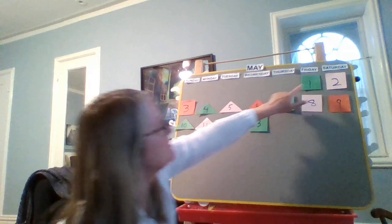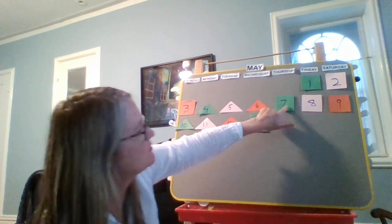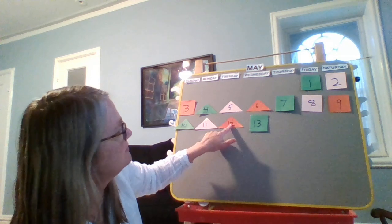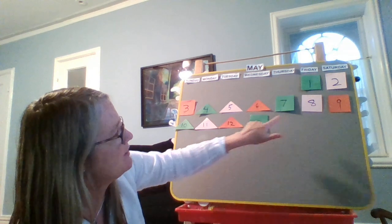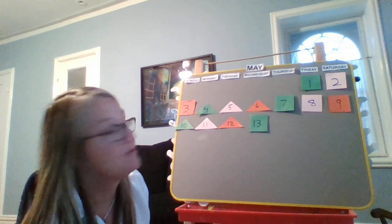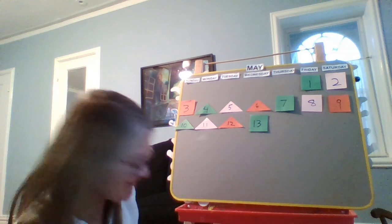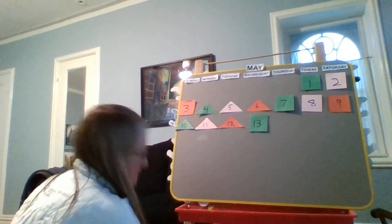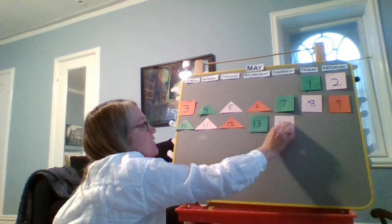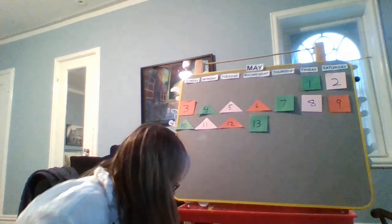And then for the shape — it's square, square, square, triangle, triangle, triangle, repeating. So do you think it's a pink square? Let's check. Let's see. It is a pink square!